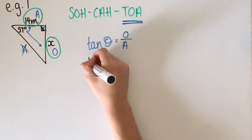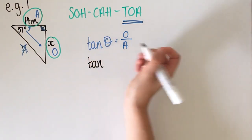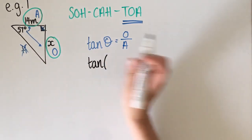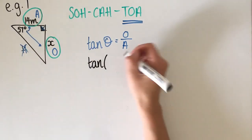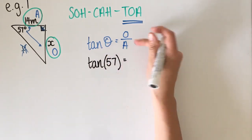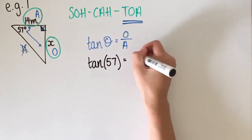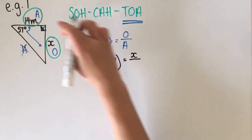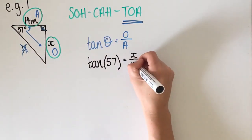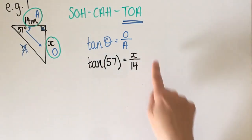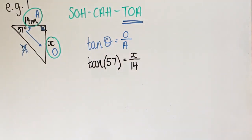Now I need to substitute. Tan of an angle — I actually know what this angle is, it's 57. I know what O is, it's X. I know what A is, it's 14. So what I need to do now is rearrange my formula and solve to find what X is.